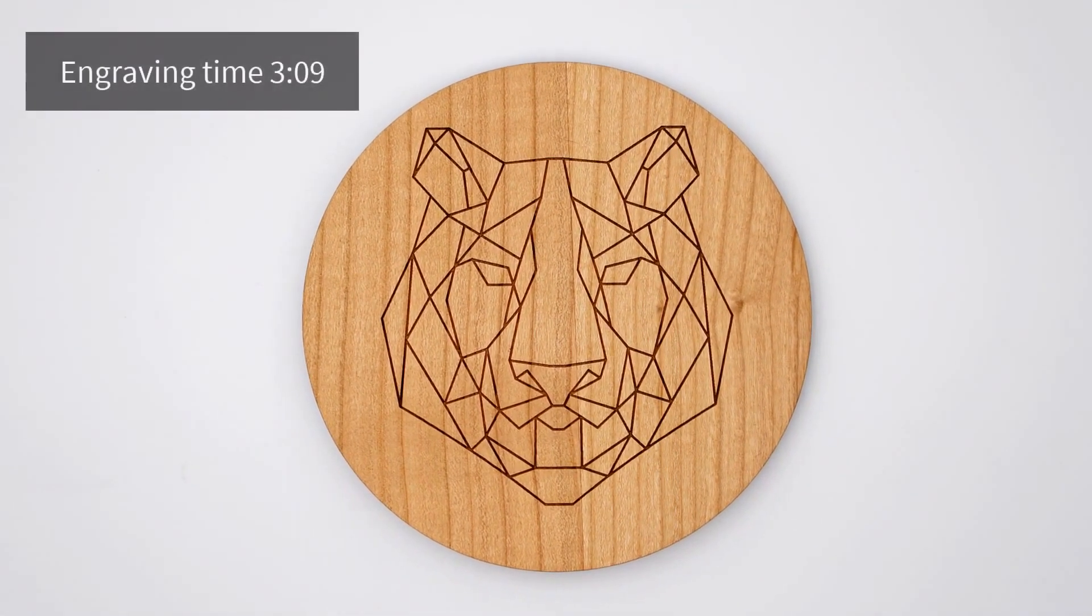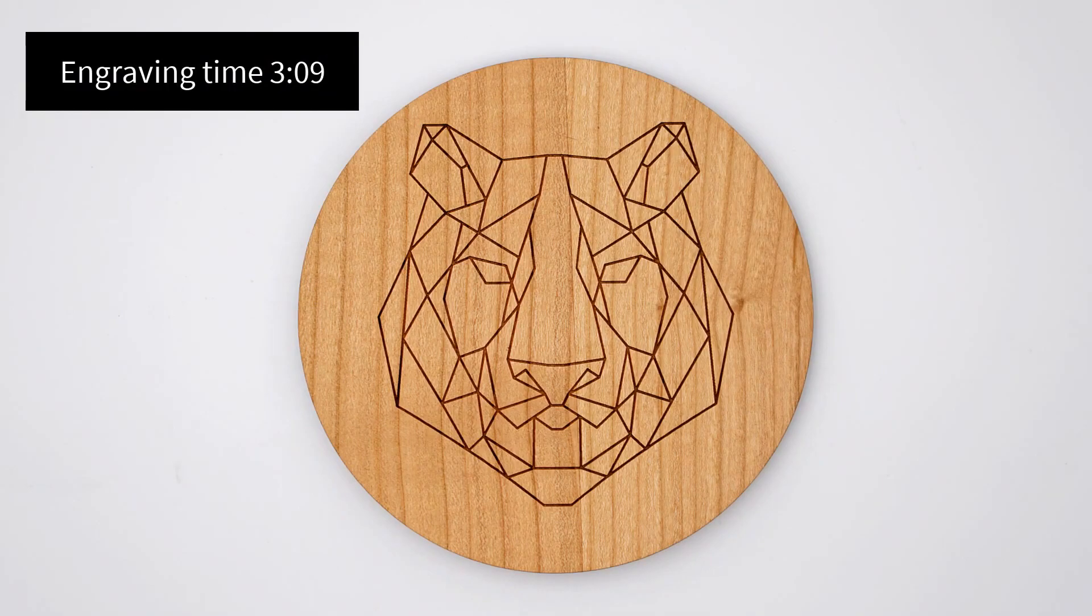The drawback with raster engraving this type of file is that it's time-consuming. In this case it took us 3 minutes and 9 seconds to complete this engraving on a 4 inch diameter circle of cherry wood.